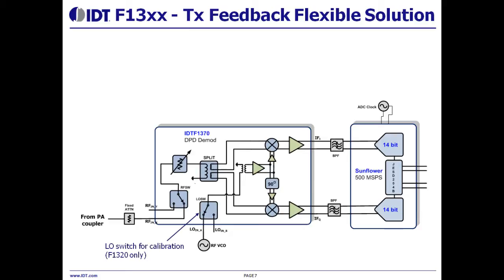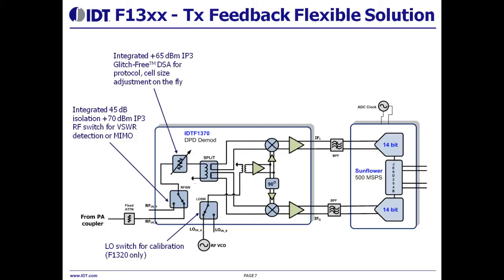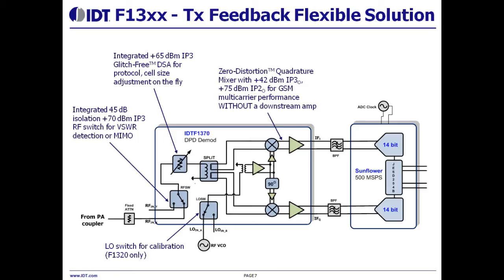It features an error switch for easy system calibration, integrated 45 dB isolation and 70 dBm IP3 RF switch for VSWR detection or MIMO, and an integrated 65 dBm IP3 glitch-free DSA for protocol cell size adjustment on the fly. Zero distortion quarter-charge mixer delivers 42 dBm IP3 and 75 dBm IP2 for GSM multi-carrier performance. A 1 dB gain ripple is maintained over 500 MHz IF, and a simple 3rd to 7th order discrete filter is sufficient.